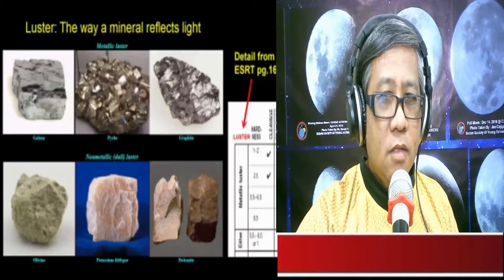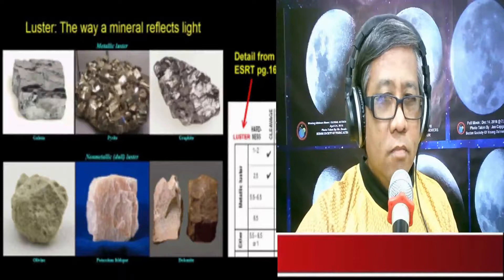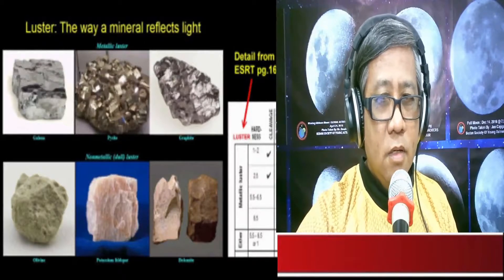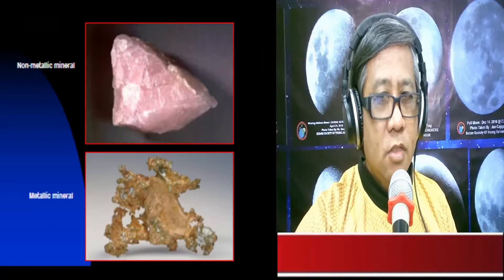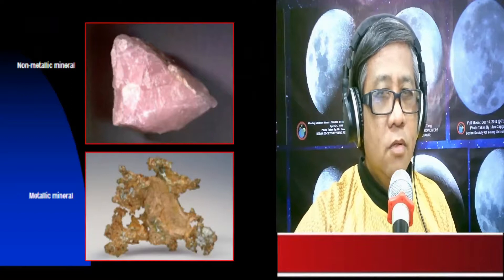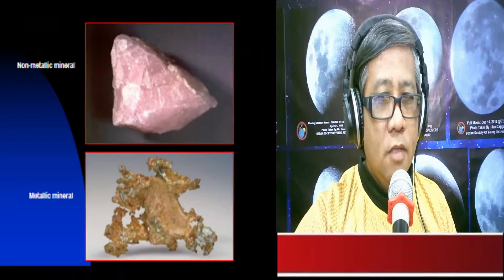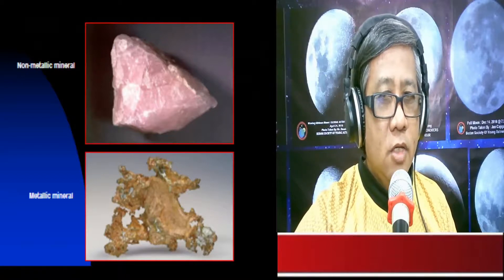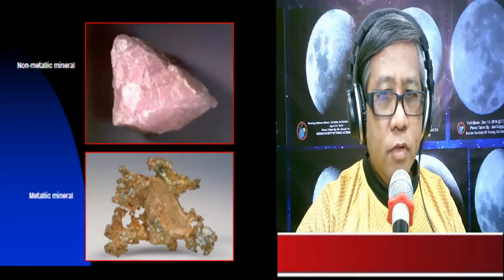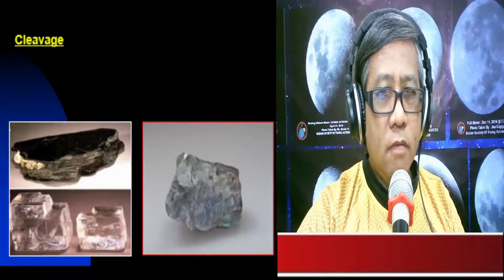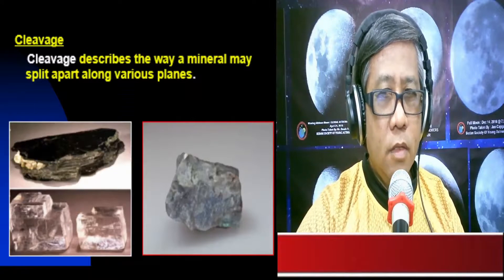Metallic minerals are shiny in appearance, while non-metallic minerals exhibit a dull appearance. Luster refers to the amount of light reflected off by a mineral, so we can classify minerals as metallic — shiny — or non-metallic — dull.